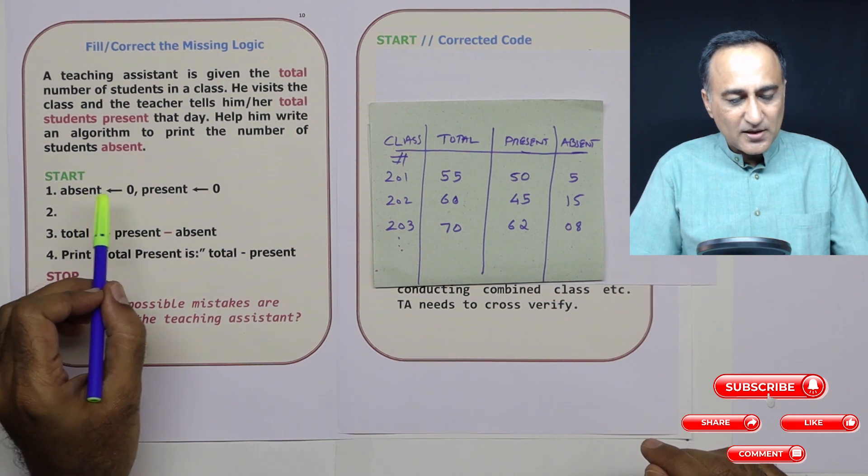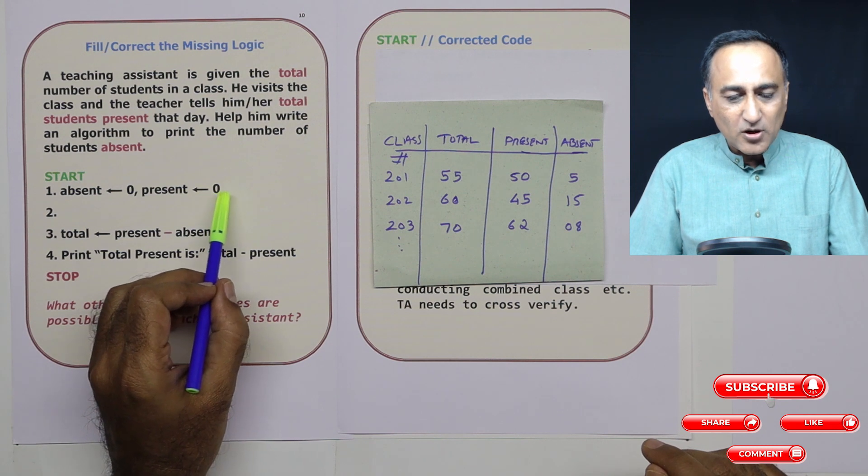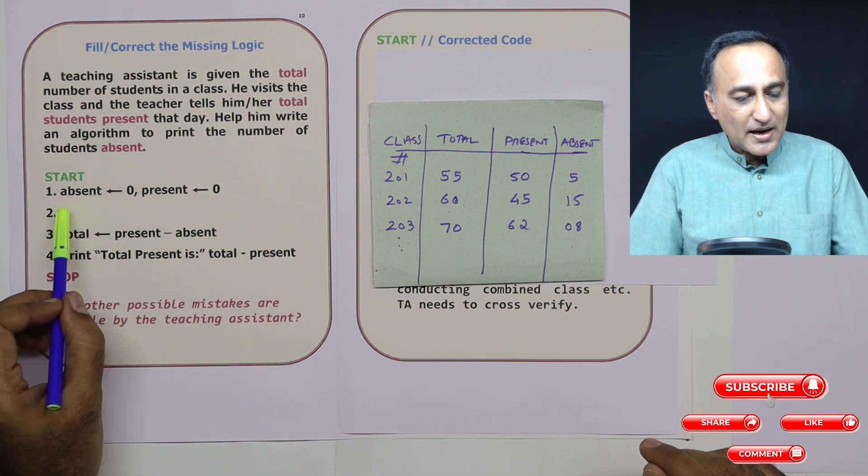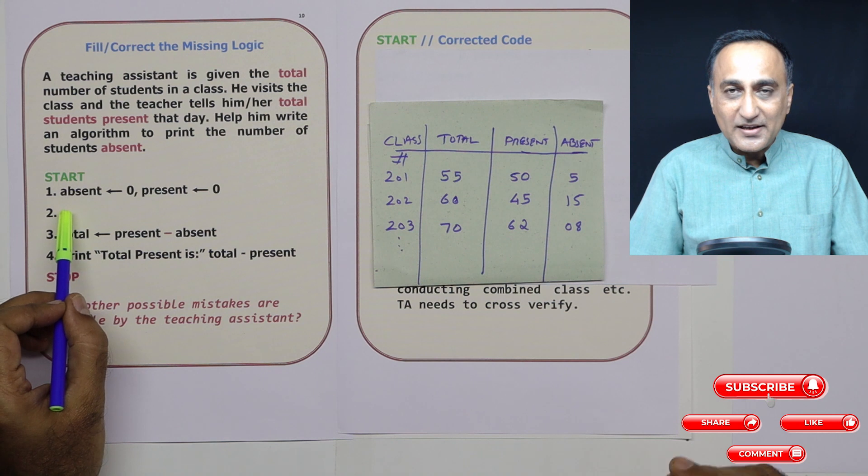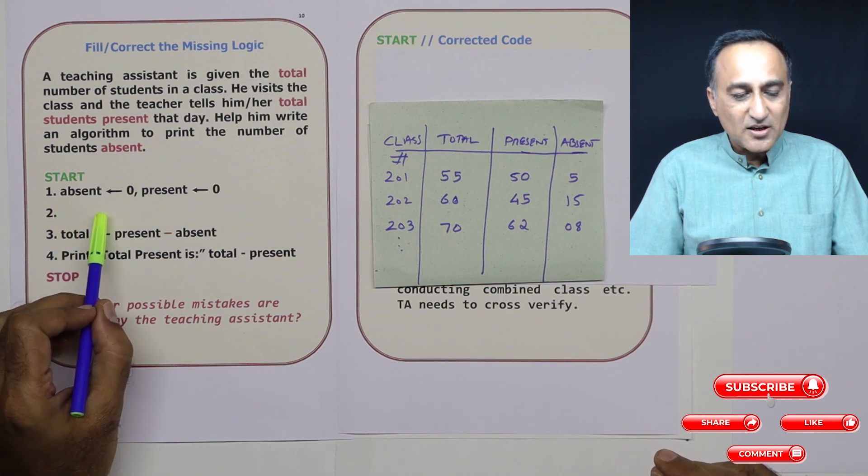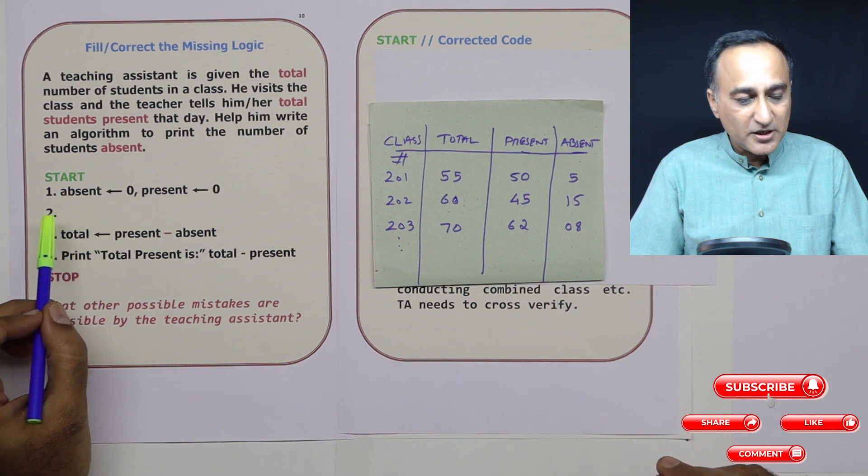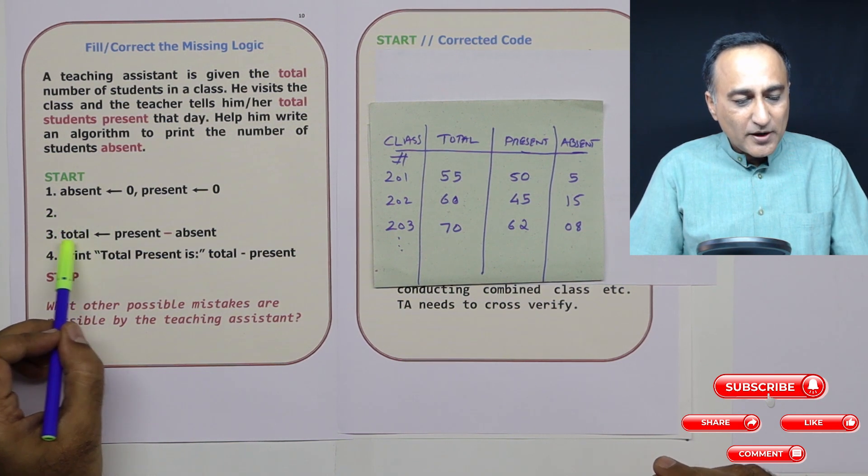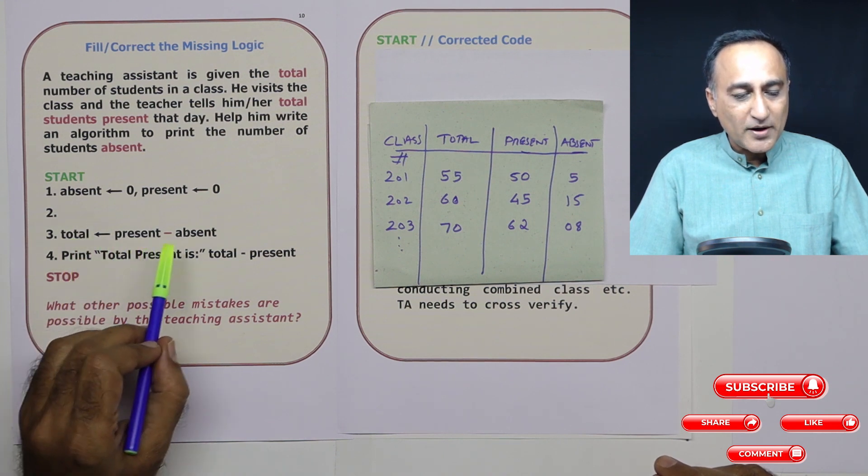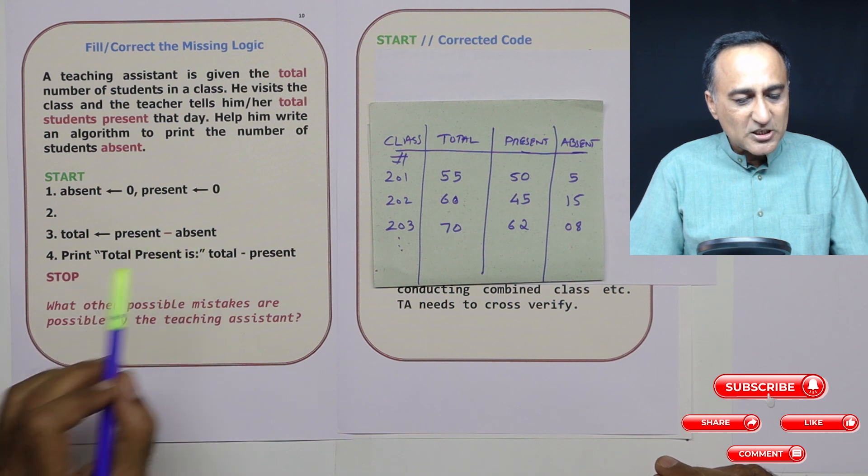Absent is zero is fine. Present is zero is also fine. But there should have been a variable called total because I am going to write a code to read first the total number of students or the total number of students present should be read from the keyboard. Then I'm not required to calculate the total, I'm actually required to calculate the absent. Absent should be total minus present.